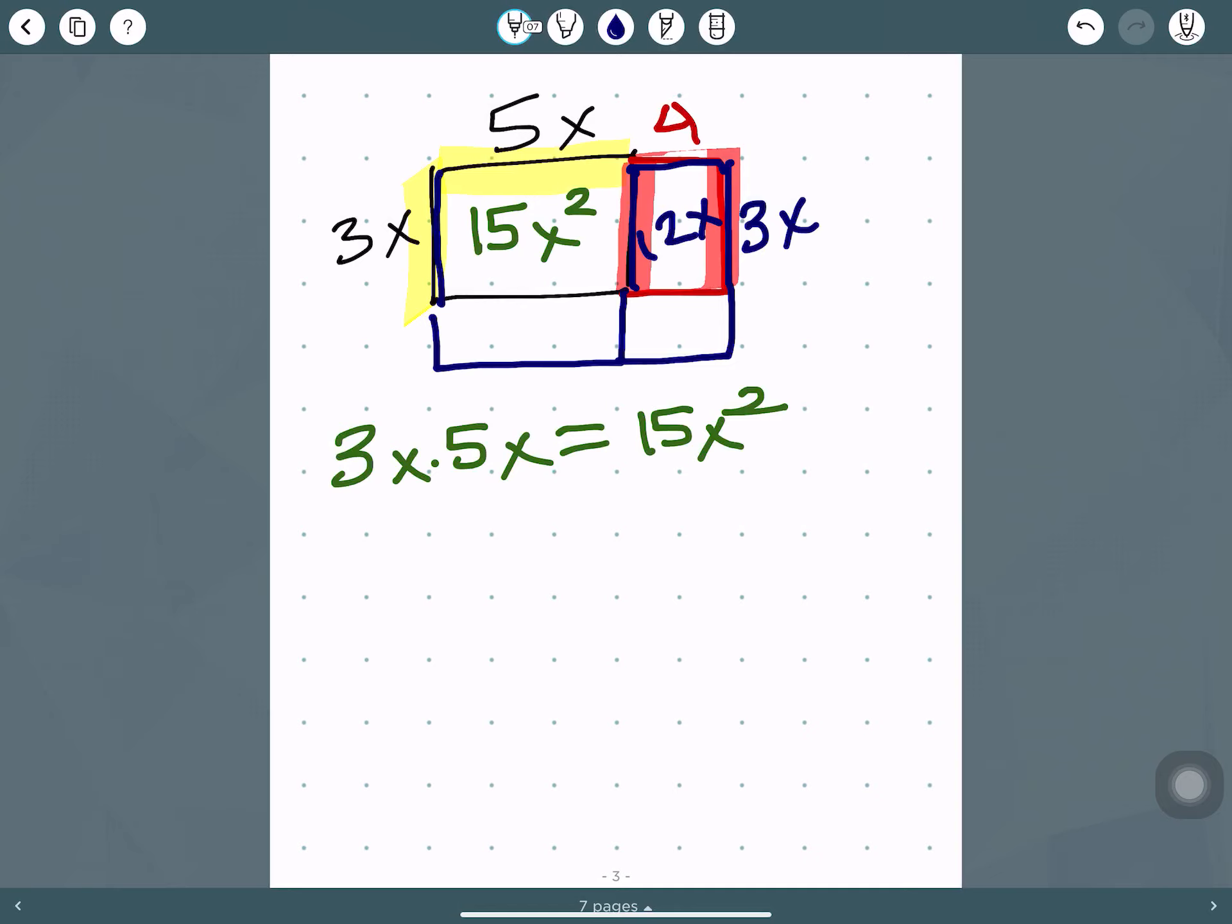3 times 4 is 12, and then x times 1 is just x. So then we have this. We wanted to extend the garden by 2 feet. So the area of this rectangle is 5x times 2, which is 10x. 5 times 2 is 10, then x.